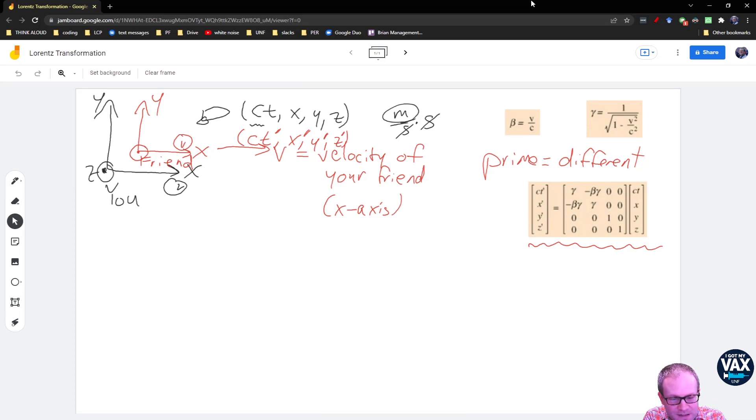The first thing we need to introduce is this beta here. Beta is just the velocity that we've already established, v, the velocity of your friend, in units of the speed of light. So since we're talking about things going close to the speed of light, we're interested in speeds like 0.5c or 90% the speed of light or 99.9% the speed of light. If we're already talking about fractions of the speed of light, then we might as well just divide out the c. So beta is the same thing as v, just without the c on it. It's how fast you're moving divided by the speed of light. It's velocity in units of the speed of light.